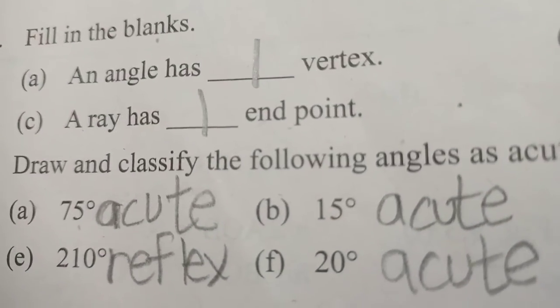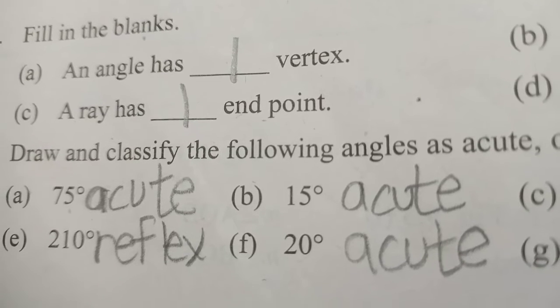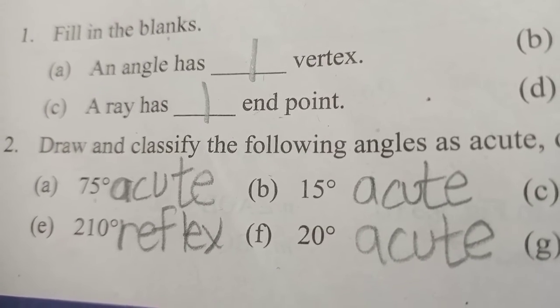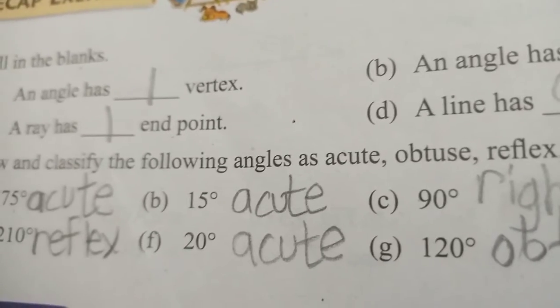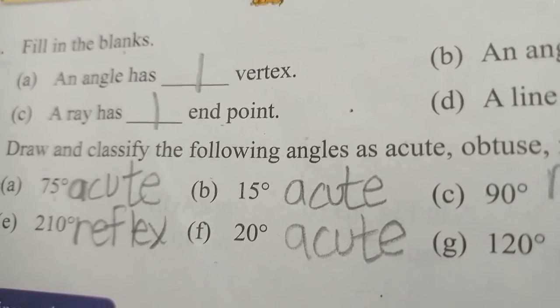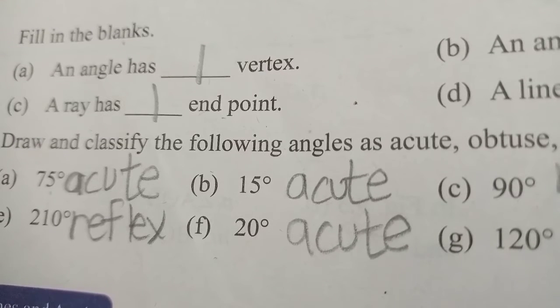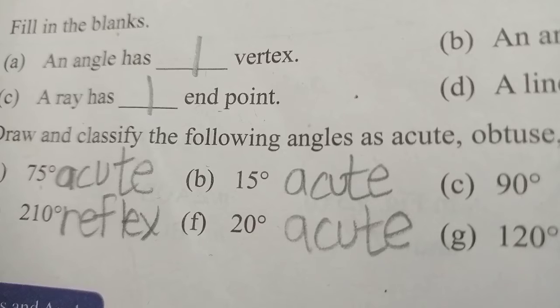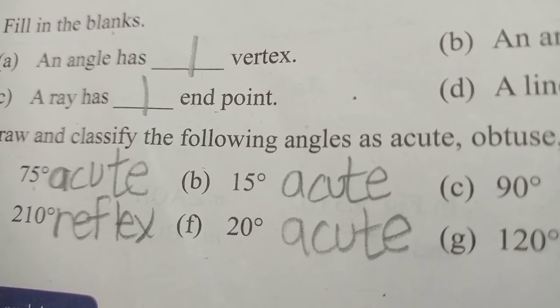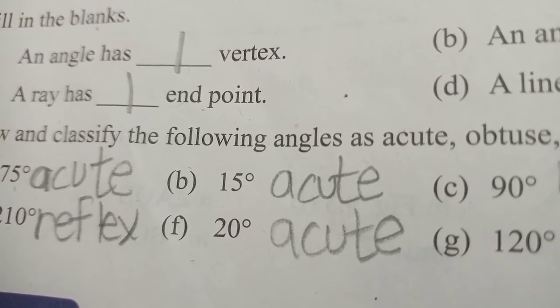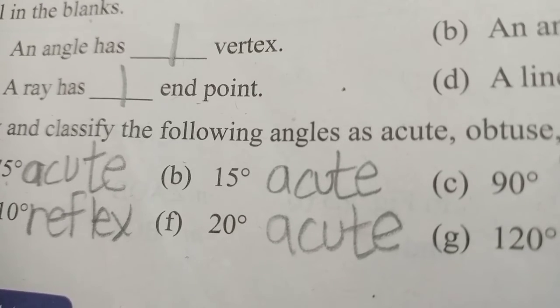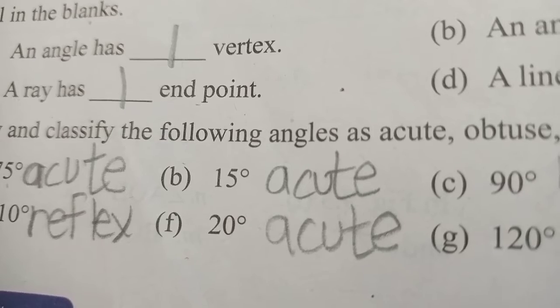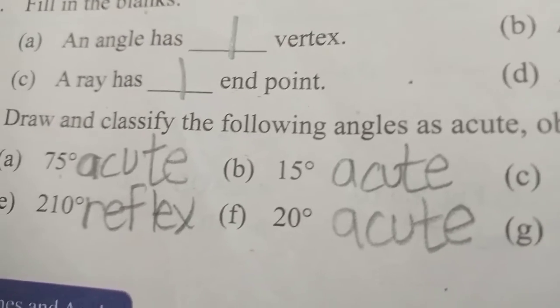First, let me tell you what is an acute angle. Acute angle is less than 90 degrees. Then the obtuse angle is more than 90 degrees and less than 180 degrees. 180 degrees is a straight angle. And then the reflex angle is more than 180 and less than 360 degrees. 360 degrees is a complete angle.